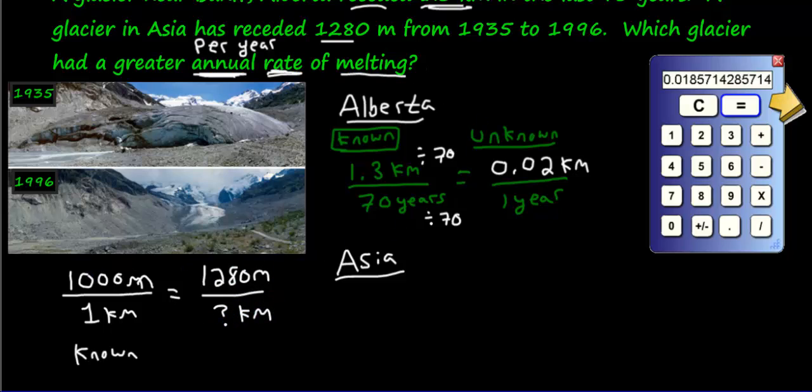You can cross multiply these. 1 times 1,280 makes 1,280 divided by 1,000. And you're just going to get 1.28 kilometers. So 1,280 meters is 1.28 kilometers. How many years is it from 1935 to 1996?